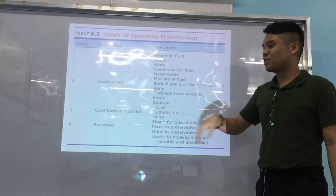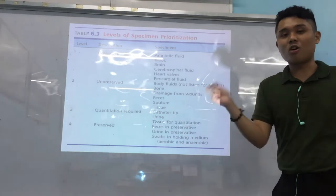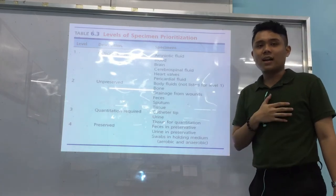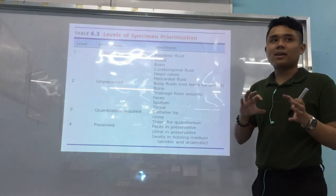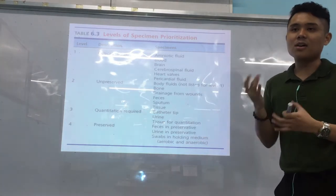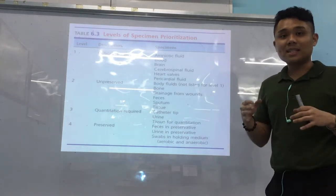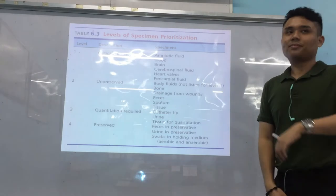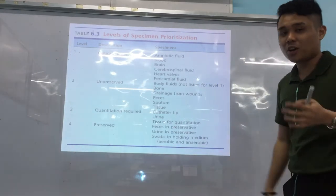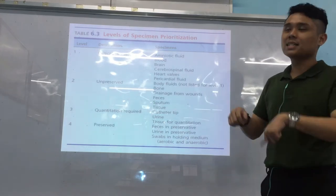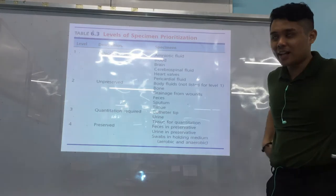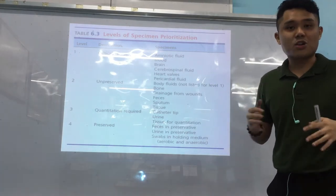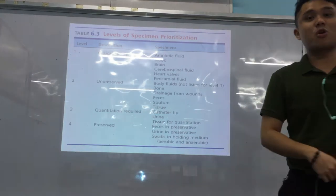Third priority is quantitation-required specimens — catheter urine and tissue for quantitation — since you just want to know the colony count. Last priority is preserved specimens, because they are well-preserved and you're confident the organisms are maintained. The preservative inhibits growth temporarily, preventing deterioration. Swabs fall in this last category because, most often, swab specimens arriving at the lab are placed in a transport medium since they easily dry out.